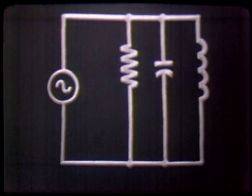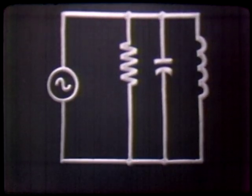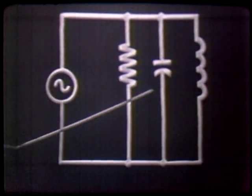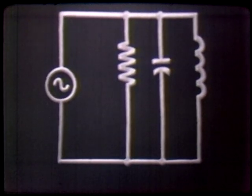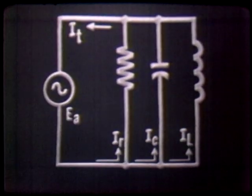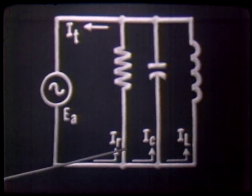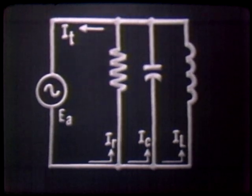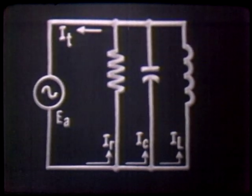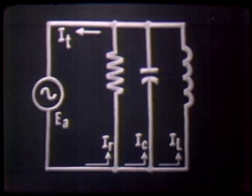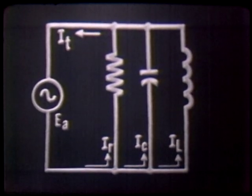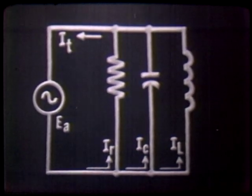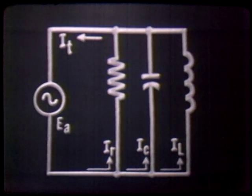Let's closely look at our circuit once again. With the applied voltage felt across each component — R, C, and L — we have three individual branch currents: IR, IC, and IL. These three branch currents combine to form our total current, IT. As you already know or suspected, the total current is not the arithmetic sum of the branch currents, but is the vector sum.